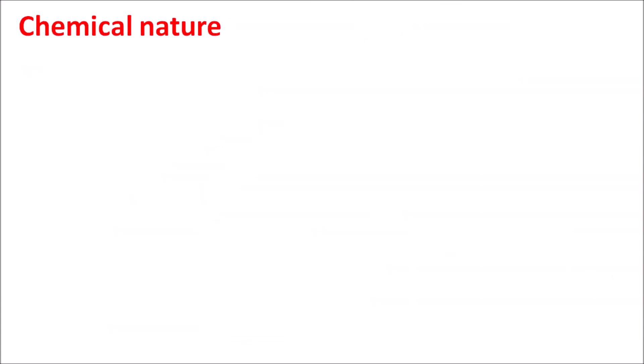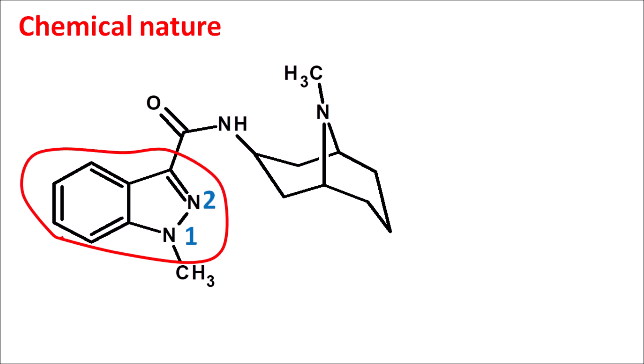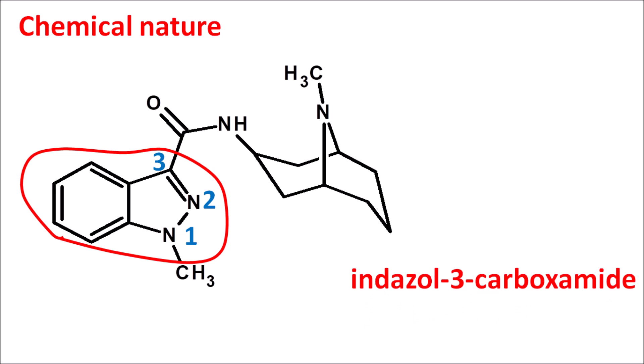Regarding the chemical nature of Granisetron: the structure contains a heterocyclic ring system. Numbering the ring as 1, 2, 3, this is a 2-nitrogen-containing 6+5 membered ring system, which is an indazole. Therefore, Granisetron is an indazole derivative. It has an amide functional group at the third position, giving the suffix 'indazole-3-carboxamide,' and a methyl group at the first position.